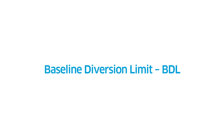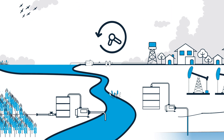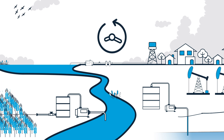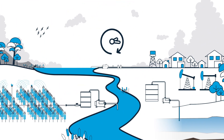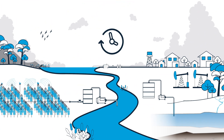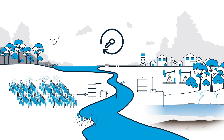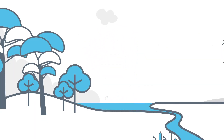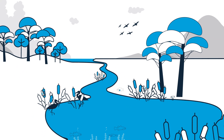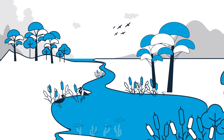The baseline diversion limit represents how much water was used throughout the basin before the basin plan. The sustainable diversion limit represents the amount of water that can now be used by communities, farmers and industries. Through the basin plan there is now water set aside to maintain the health of our rivers, lakes, wetlands and underground systems.